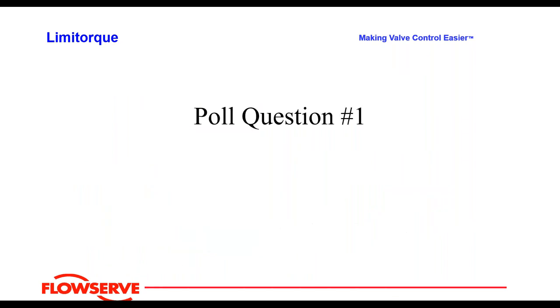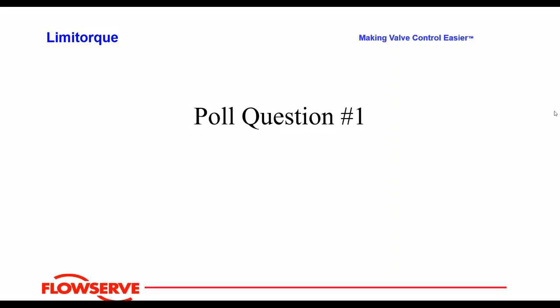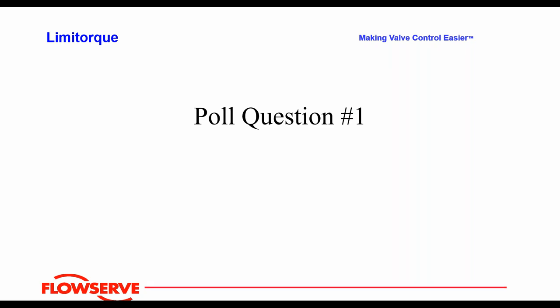That brings us to Poll Question 1: Why would a plant consider automating their manual valves? The answer is E — all of the above: increase safety, lack of valve accessibility, improve operational efficiency, and improve process control. One hundred percent answered correctly.